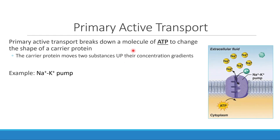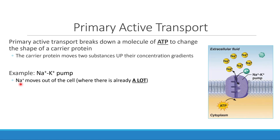One of the best examples of primary active transport is the sodium-potassium pump. Our cells are salty bananas — meaning there's a whole lot of sodium outside and a whole lot of potassium inside. The sodium-potassium pump is what gets us to that place. We have to use ATP because this pump pushes sodium outside where there's already a lot of sodium, and brings potassium into the cell where there's already a lot of potassium.